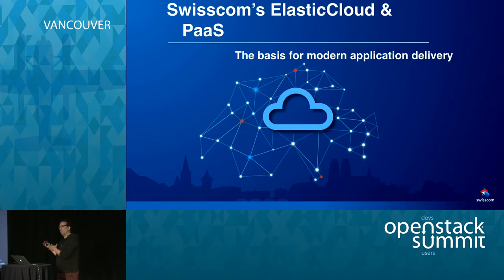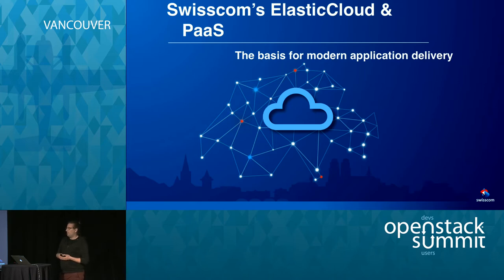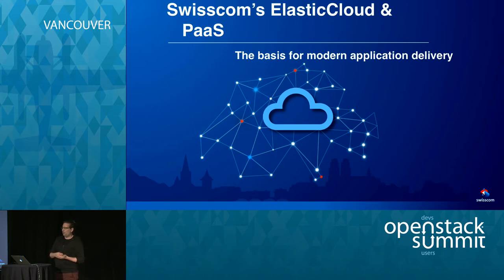Such a cloud should be scalable based on the requirements that different users have — IT architects, someone deploying a new platform, or maybe budget constraints. It should be a standardized platform used within Swisscom, but also by Swisscom customers. Within the 360-degree cloud, one part is the Elastic Cloud, including the Application Cloud deployed on top of it. With this Application Cloud, we offer a platform as a service that eases development of new applications, reduces complexity, and enables easier iteration on new ideas and faster time to market.